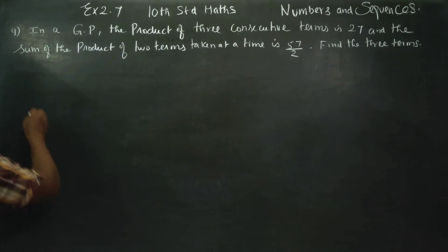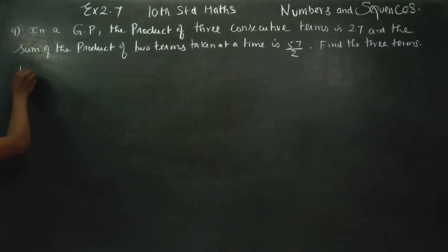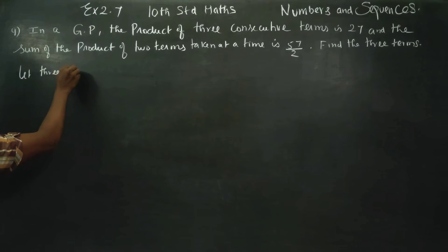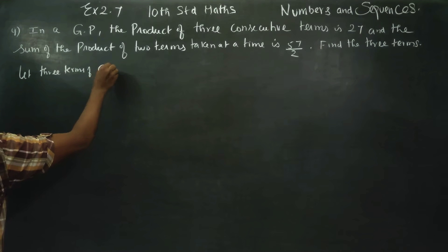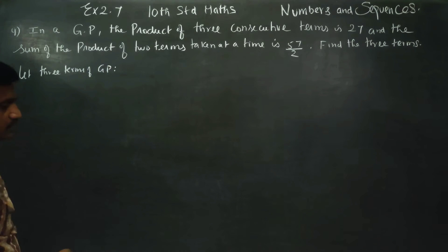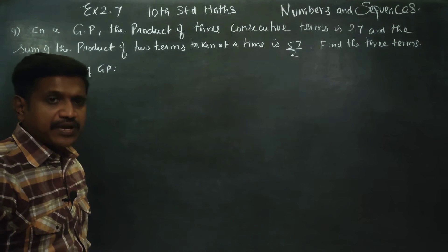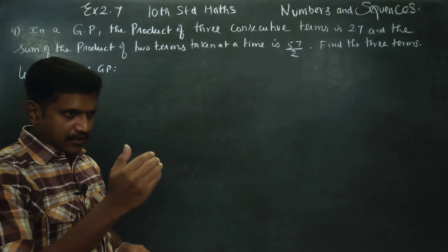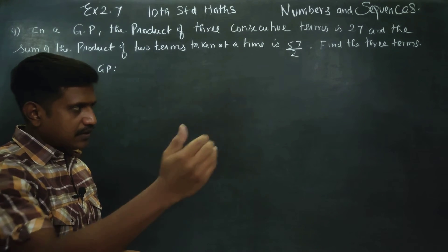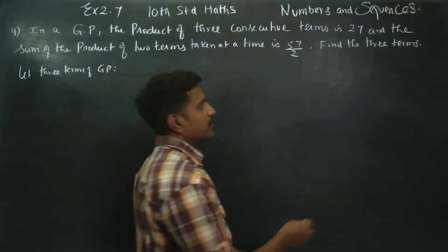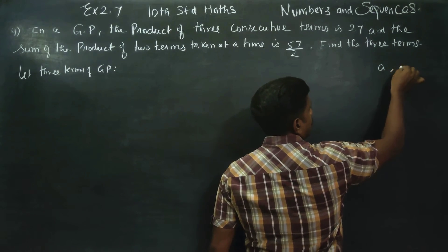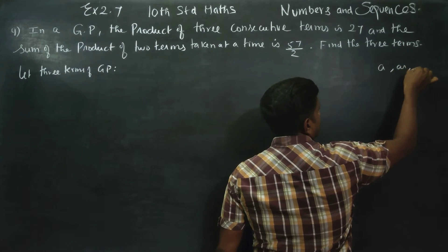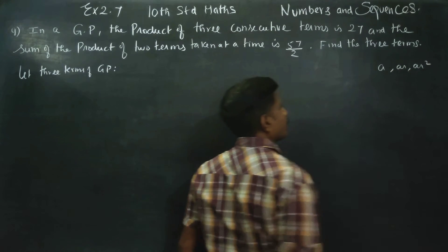Find the 3 terms. Let 3 terms of a geometric progression be represented as A, AR, AR square. So the three terms are A, AR, AR square.